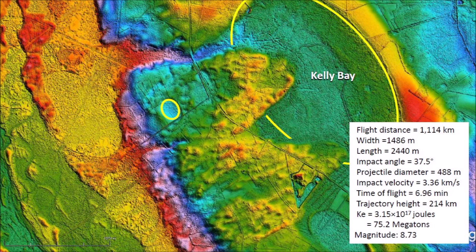The diameter of the glacier ice projectile that made the bay is estimated to be 488 meters. The impact energy was equivalent to 75.2 megatons of TNT, which would have caused seismic vibrations of magnitude 8.73.